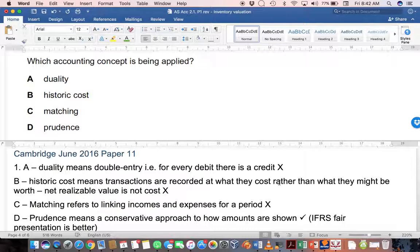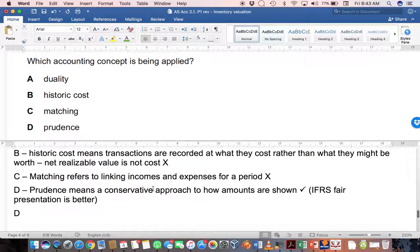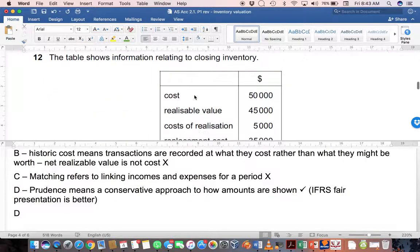B - Historic cost means transactions are recorded at what they cost rather than what they might be worth. Net realizable value is not the cost of the item, so historic cost doesn't really come into it. Matching refers to linking incomes and expenses for a period, and that also does not apply. Prudence means you are going to value your items conservatively. So this is the most suitable answer. However, please keep in mind that fair presentation as set out by IFRS, the International Financial Reporting Standards used internationally, is actually an overriding principle you would use instead of prudence if necessary. But in this case, prudence is the best option available. So you would choose D.